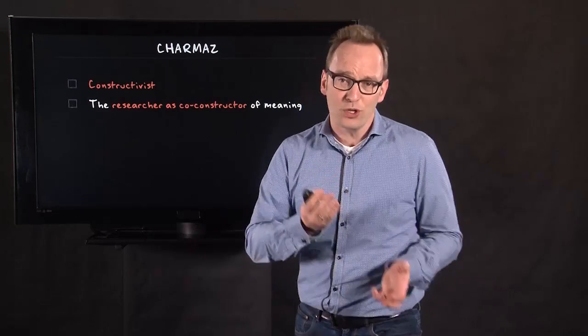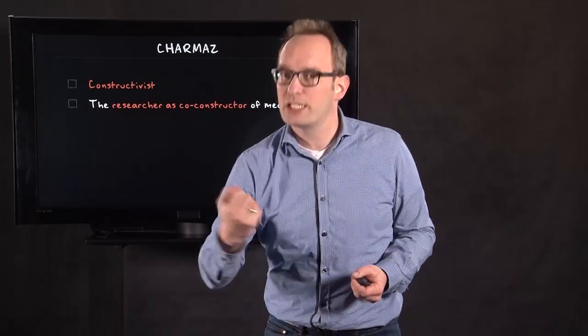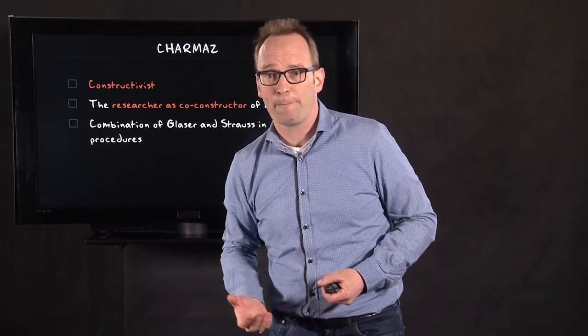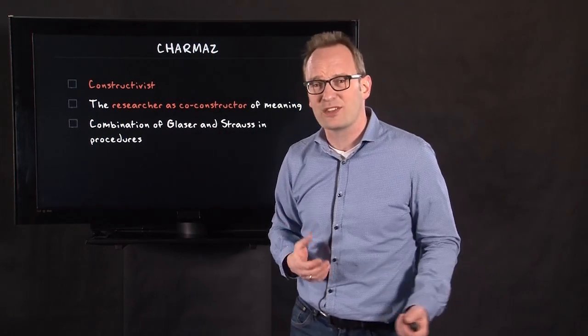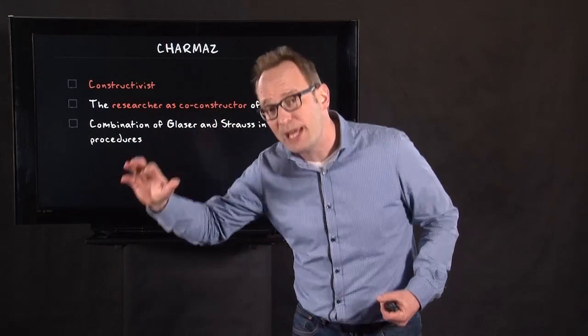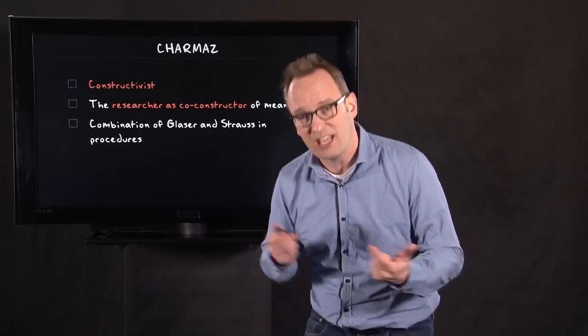The third version of Grounded theory I would like to discuss is the version by Kathy Charmaz and others. It's a constructivist version of Grounded theory, taking into account the constructivist critique on mainstream research during the 80s and 90s. And what they say is the researcher is a co-constructor of meaning. So meaning is not objectively pulled out of people. It's co-constructed in interactions, for instance. And what she suggests is a combination of procedures by Glaser and Strauss. So there's a bit of open coding and a bit of axial coding in it. But at the same time, she's very open for constant comparison and theoretical sensitivity.